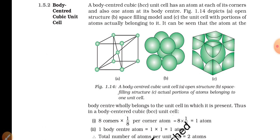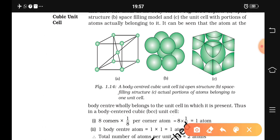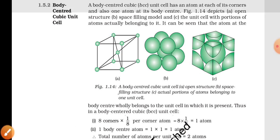Unlike the corner atoms, which are shared with other adjacent unit cells, only one-eighth of a corner atom belongs to a particular unit cell. For the calculation, we have eight corner atoms multiplied by one-eighth per corner atom — since a corner atom is shared one-eighth with each adjacent unit cell, one unit cell gets one-eighth. So eight corner atoms multiplied by one-eighth gives you one atom.